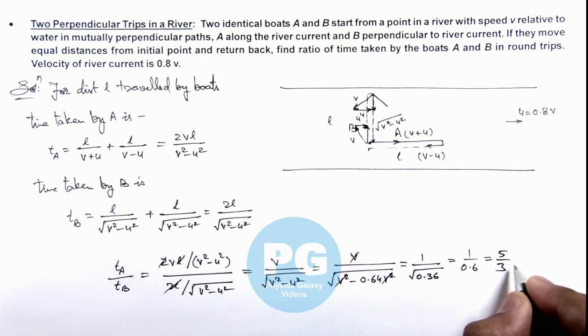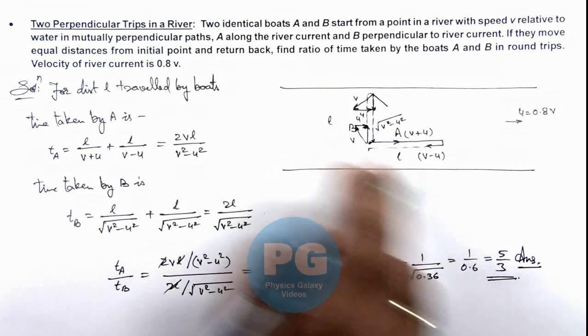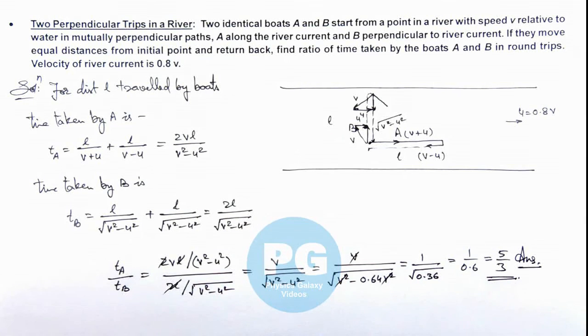So this will be the final result of the problem, the ratio of the time taken by boats A and B in traveling equal distances as described in the problem.